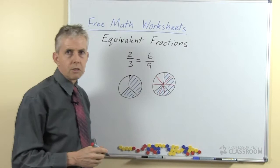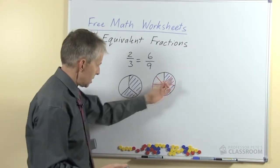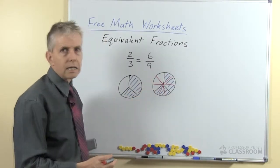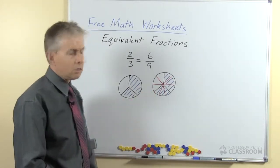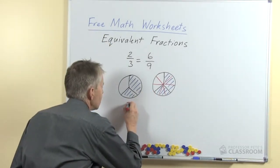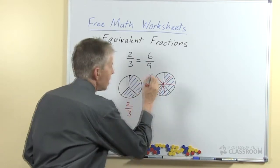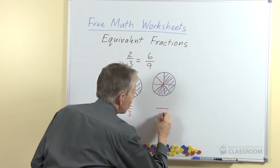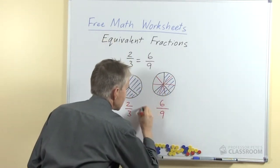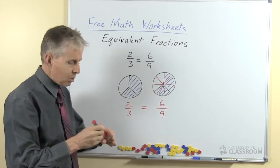Have we changed the amount that's shaded? No we haven't, it's still the same amount of blue shading as was there before, but is it the same fraction? No of course it's not. On this side we know this is two-thirds, this one what fraction is this? Well there are nine pieces and six of them are shaded and those two are equal.